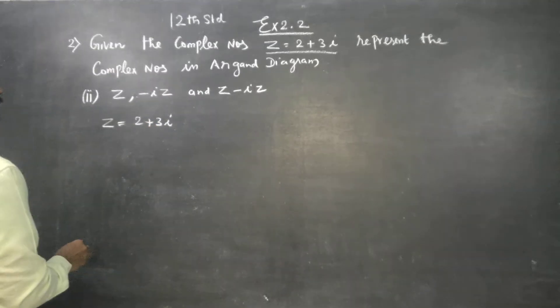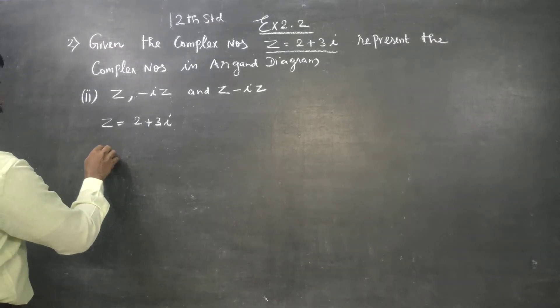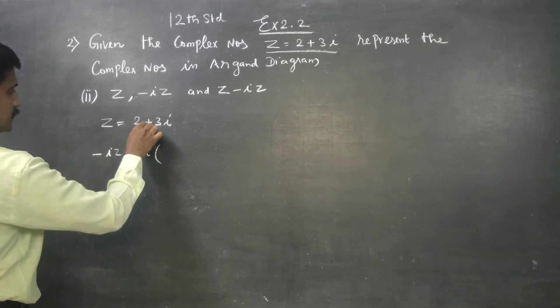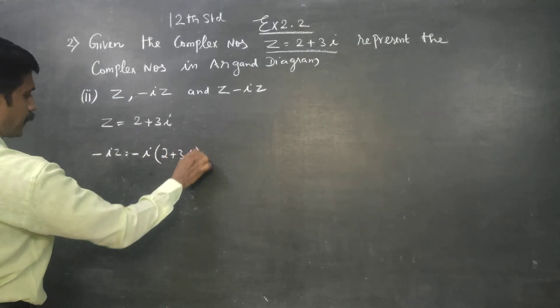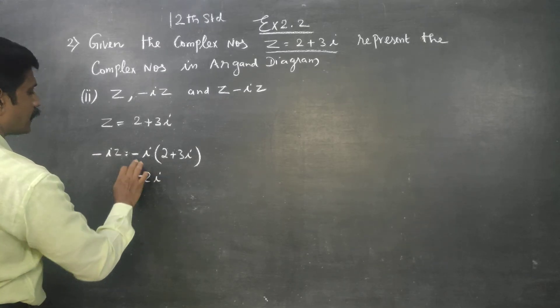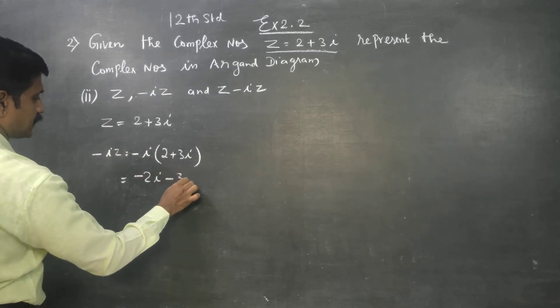This is my first point. Then what is my minus iz? Minus of i into z, 2 plus 3i. Minus i into 2 is minus 2i. Plus into minus is minus 3i squared.